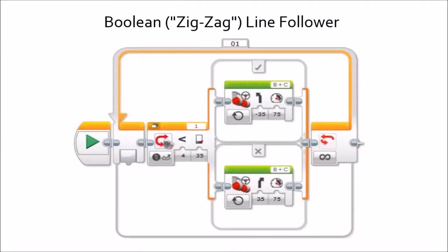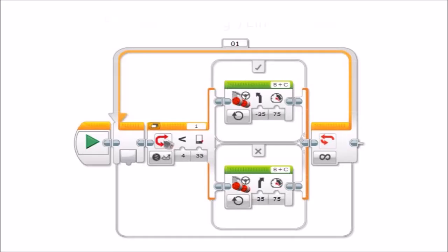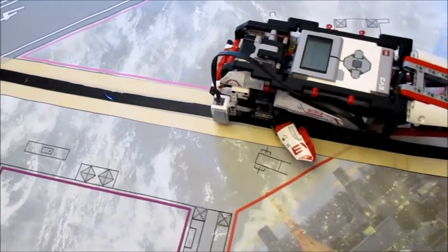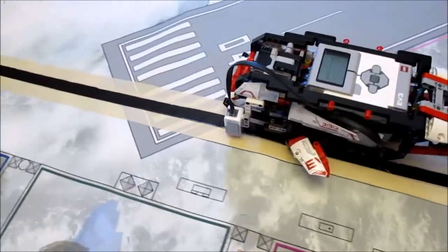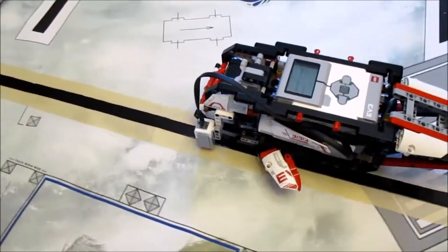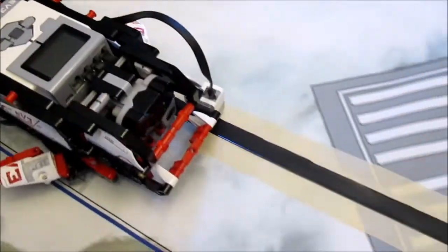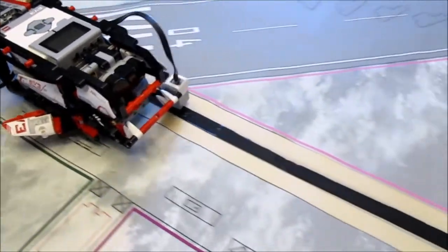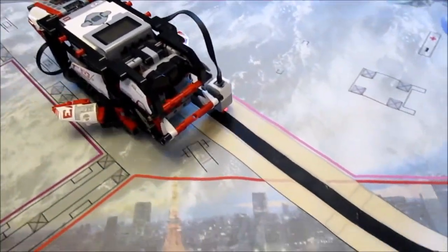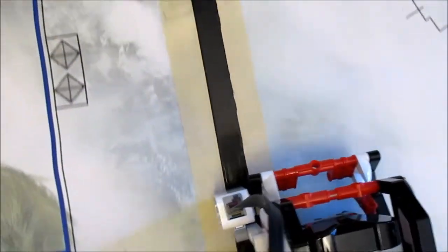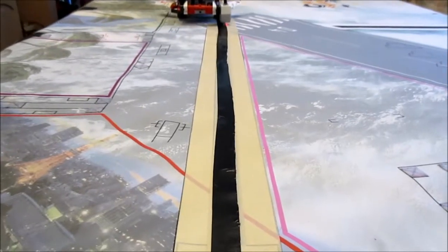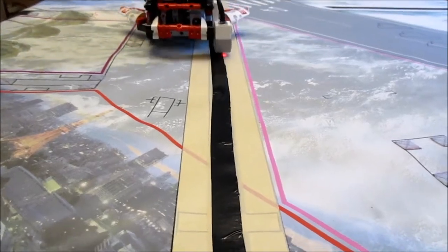The first type of line follower I'll be talking about today is a Boolean line follower, also known as a zigzag line follower, and it gets its name because that's exactly what it does — it zigzags back and forth. This is hands down the simplest line follower you can program. You program it by having it turn in one direction when it sees the white part of the line and turn in the opposite direction when it sees the black part. The robot will turn right when it sees white and left when it sees black.